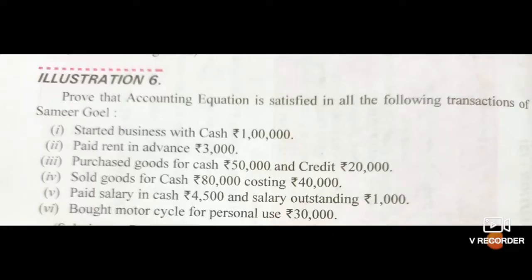Good morning. Let's solve the next problem. Prove that the accounting equation is satisfied in all the following transactions of Samir Goel. Samir Goel is the owner of this business. First, started business with cash Rs. 1 lakh. Second, paid rent in advance Rs. 3,000. Third, purchased goods for cash Rs. 50,000 and credit Rs. 20,000 — meaning total goods purchased were Rs. 70,000.